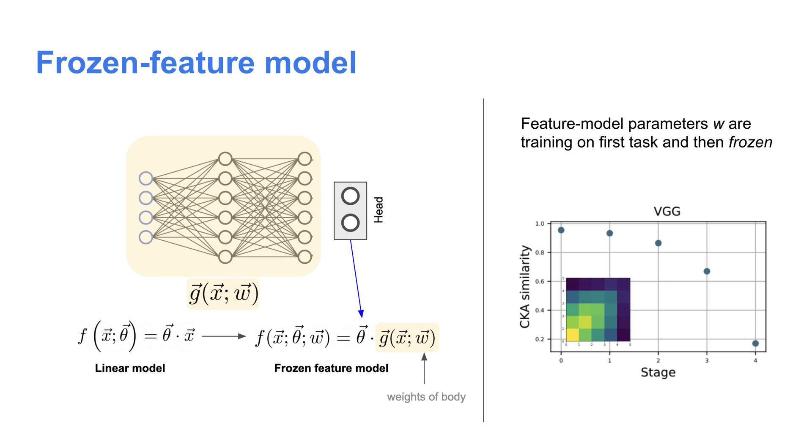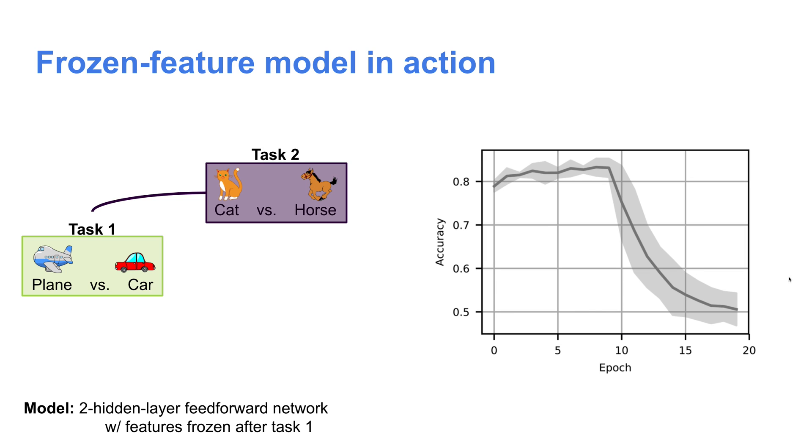The reason that this separation is useful is that as we saw earlier, forgetting doesn't really change the representations of the input side layers very much. So to a relatively good approximation, we can approximate these features as frozen after the first task, hence the name frozen feature model. We can use our linear model intuition, keeping in mind that we're talking about a linear model on features which were learned during the first task.